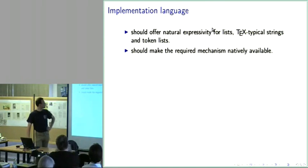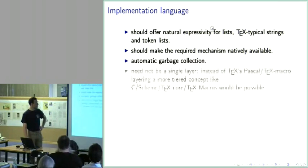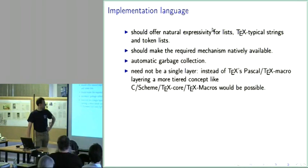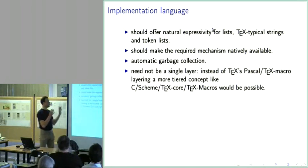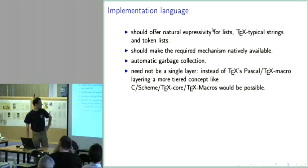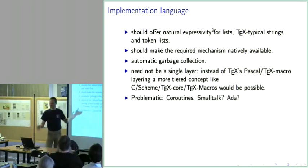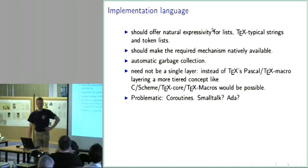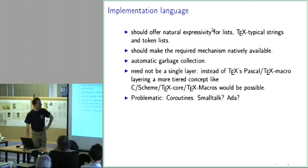Here I was talking about an implementation language for these concepts and making demands of it: it should offer natural expressivity for lists, TeX-typical strings, and token lists; the required mechanisms should be natively available within the language; it should have automatic garbage collection; it need not be a single layer — instead of the TeX Pascal / TeX macro layering, one can use more layers in between. I present some examples inspired by Emacs, which is written mostly in Emacs Lisp based on C. The main language you work with in Emacs is Emacs Lisp, and even though some extensions must be done in C, it makes the whole thing much more tractable.